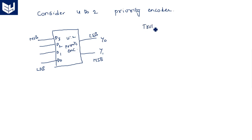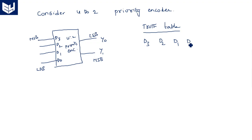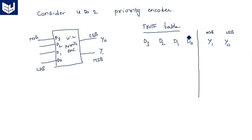Let us go to the truth table. Here you can understand what is meant by the priority encoder and what is the basic difference between the encoder and the priority encoder. We have inputs D3, D2, D1, D0 and outputs Y1, Y0. The order is important — on the output side this is MSB and this is LSB; on the input side this is LSB and this is MSB.